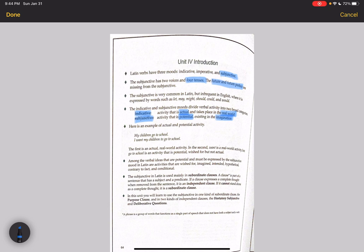Here's an example. So, my children go to school. This is a statement of fact. A statement of something actually happening in the real world. On the other hand, I want my children to go to school. In this sentence, I want, that's happening in the real world. The main verb is happening in the real world. But the children going to school, this part is potential. It's pretty potential.